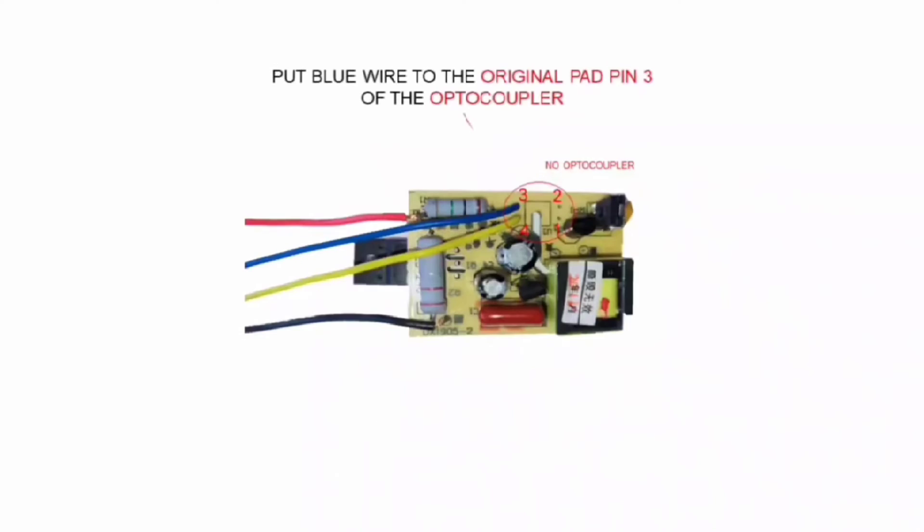Put the blue wire to the original pad pin 3 of the optocoupler IC. And yellow wire to the original pad pin 4 of the optocoupler IC.